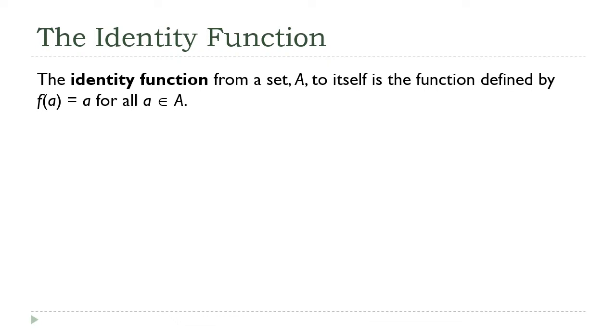The first one is this so-called identity function. It's a function that goes from a set to itself, and it does that by mapping every element to itself. It literally makes no change to the input values.